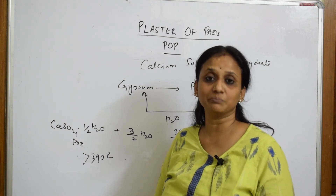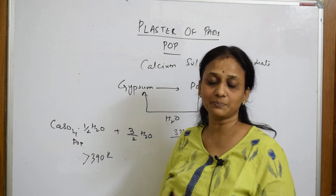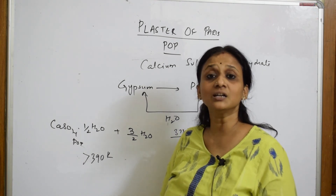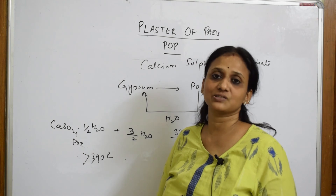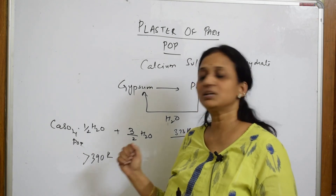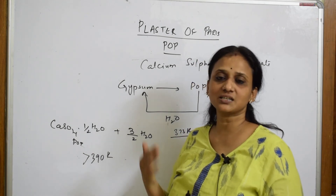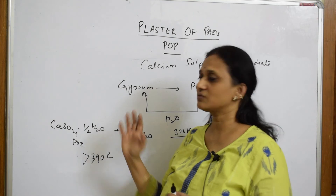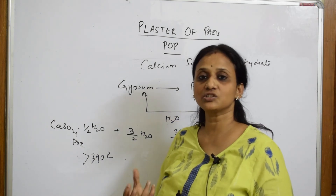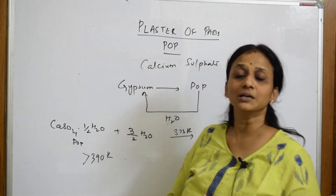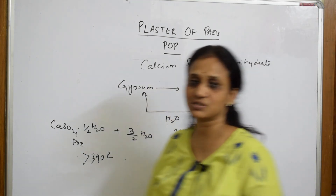If plaster of paris is heated above 390 Kelvin, it loses its water of crystallization and forms a hard mass called burnt plaster. So heating POP beyond 390 K causes loss of water and produces burnt plaster.